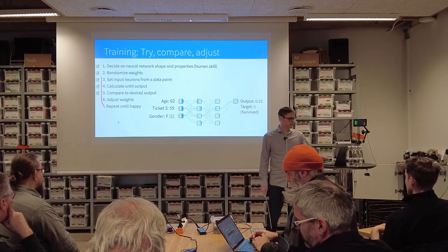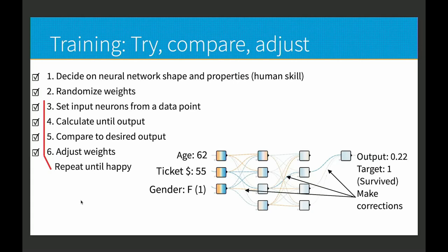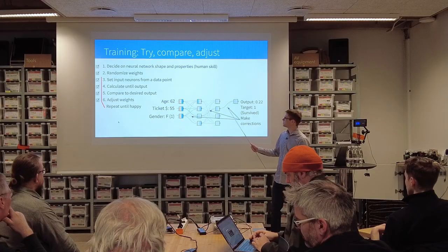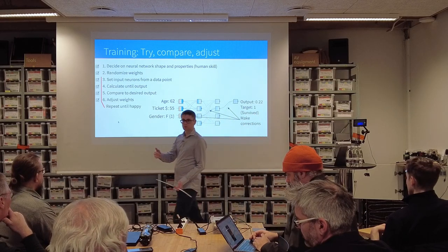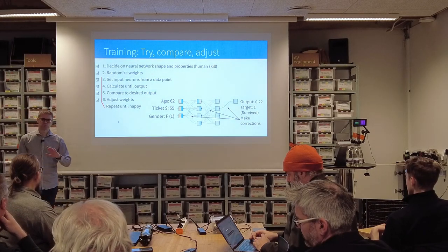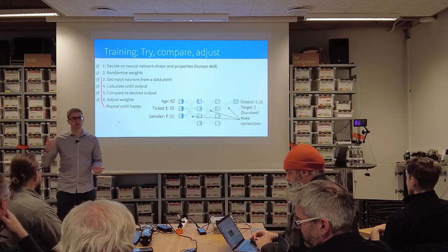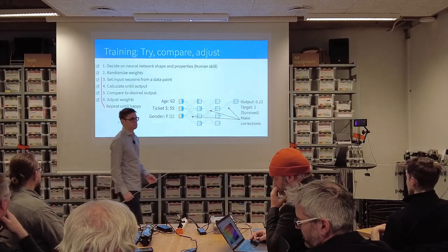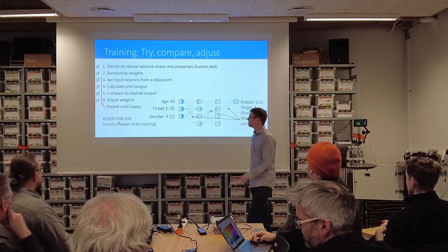That brings us to the adjustment step. We do the calculations backwards and ask: which of these weights are pulling the answer in the right direction, and which are pulling it in the wrong direction? So we adjust the connections — and perhaps also the sign of them — and that's it. We've done it for one passenger. Then we do it again for the next passenger, all through the 900 passengers on our list. When we're through all 900, the network has probably gotten a little better but not good enough, so we go through the entire list 100 times. That takes about 5 seconds on a pretty normal computer for this small network.